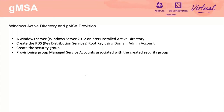There are some preparations needed in order to use GMSA. Firstly, you need to set up a Windows Active Directory server and create the KDS root key using the domain admin account. You also need to create a security group and get the GMSA credentials associated with the security group.